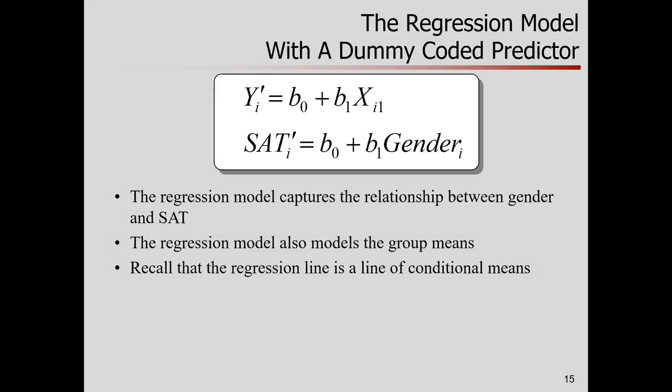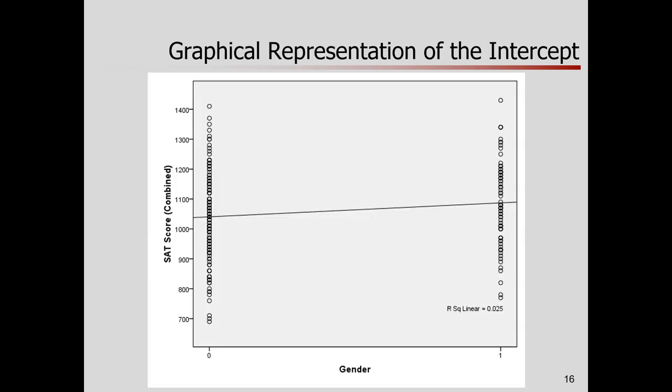Let's do a regression. There's my generic representation of the model. And here, plugging in for my example. Predictive value of the outcome variable, in this case SAT, is equal to intercept plus slope times predictor. In this case, this is my dummy coded variable for gender. The regression model will capture the relationship between the predictor, gender, and SAT. It is also a model of the difference in group means, or conditional means. There's that regression line.